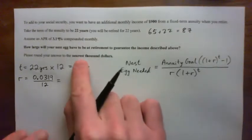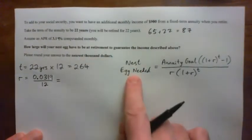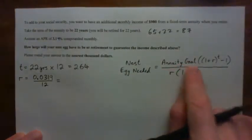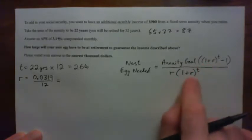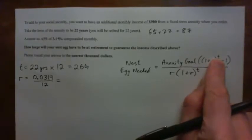So, you might have figured out we need the nest egg needed formula. We plug in the annuity goal and then this is the rest of the formula. We need to find the monthly interest rate R and the number of monthly payments T.